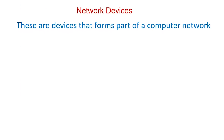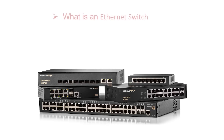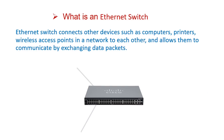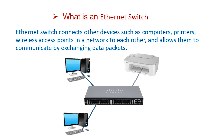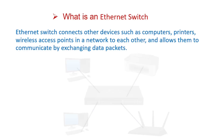What are network devices? These are devices that form part of a computer network. An Ethernet switch connects other devices such as computers, printers, and wireless access points in a network to each other, and allows them to communicate by exchanging data packets. Don't worry if you are not yet familiar with certain terminologies like data packets — I will explain further in subsequent videos.